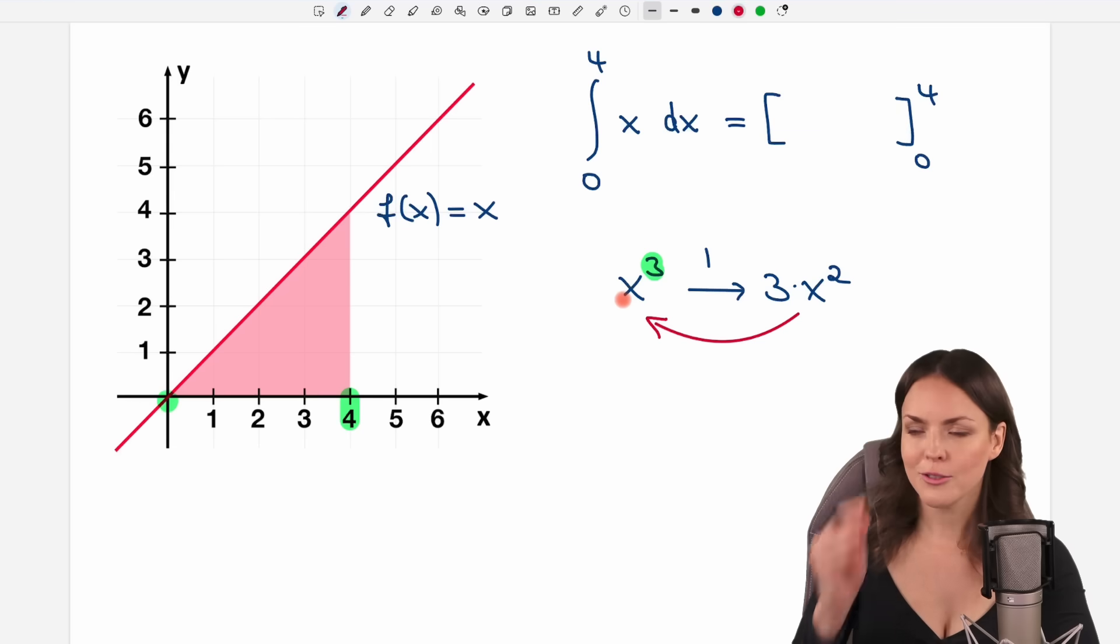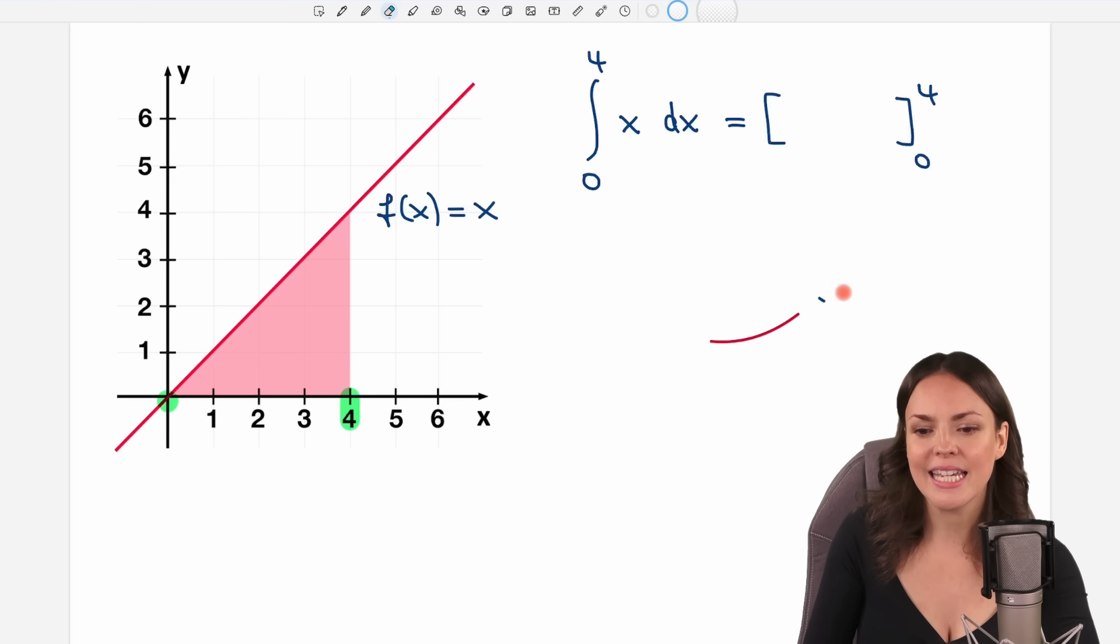But now we need the antiderivative, so from here going back to the origin. Usually you're super confused at the beginning because you're so used to differentiating things, and now you have to do the other way around.